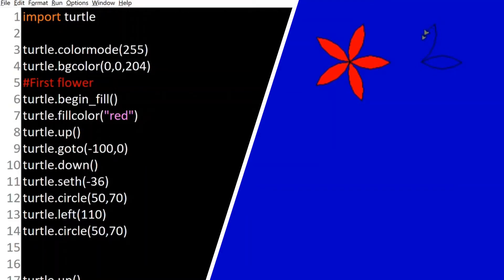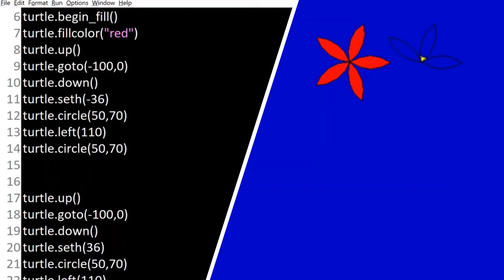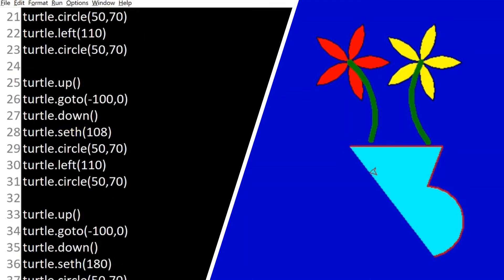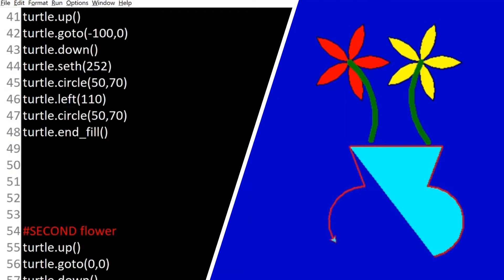Most importantly, the setheading code where we use it to set the direction of the orientation of the particular turtle while drawing the set of two flowers.